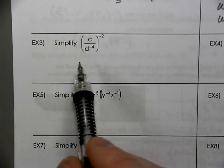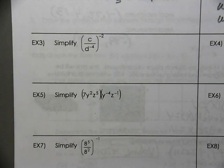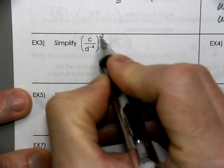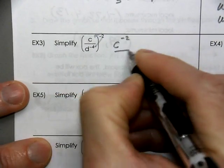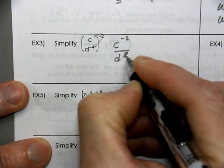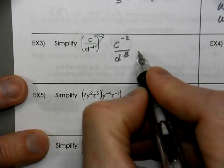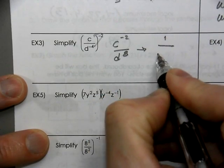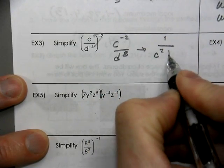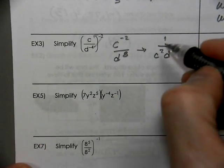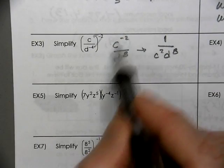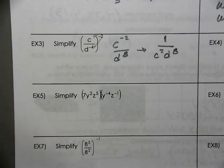What do you think we do first in this case? We'll distribute the 2 into both exponents, giving c to the negative 2 and d to the positive 8. Because c has a negative exponent, it becomes c squared in the denominator, and d to the eighth stays on top. Since everything moves away from the top, you're just leaving a 1 there.